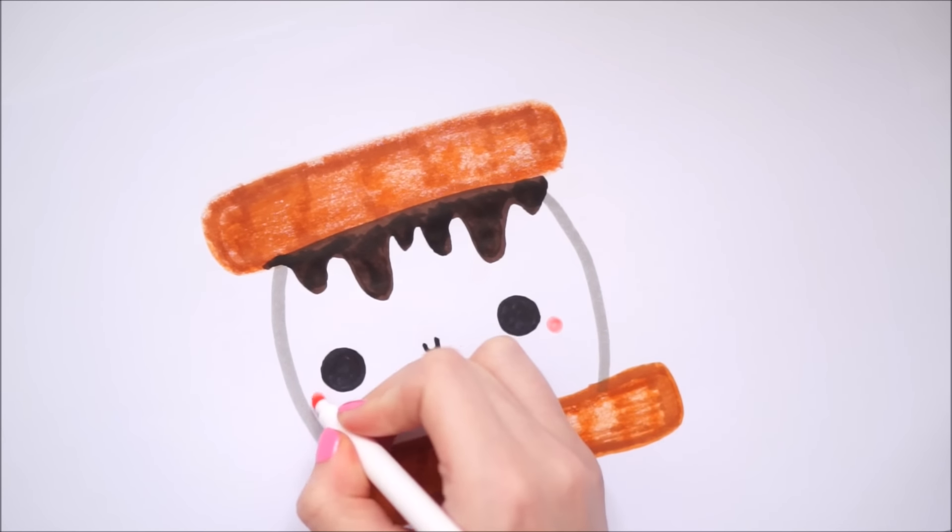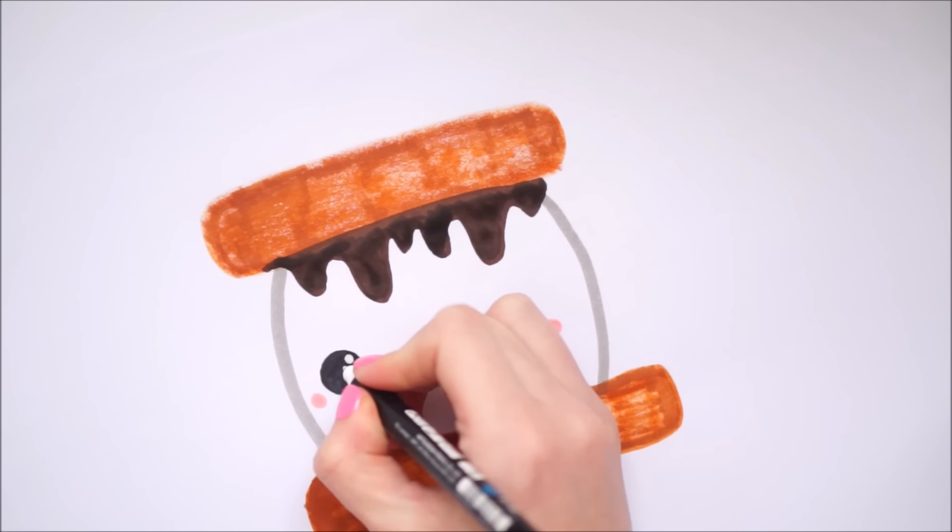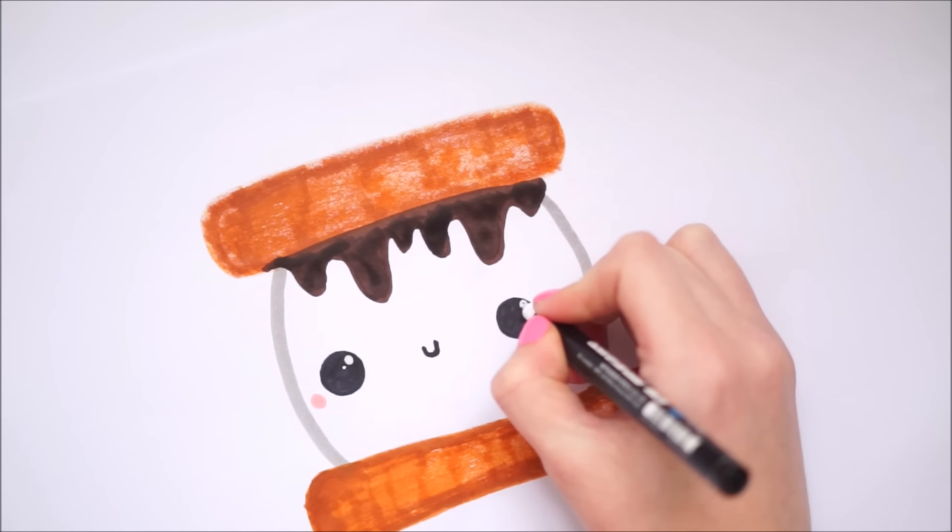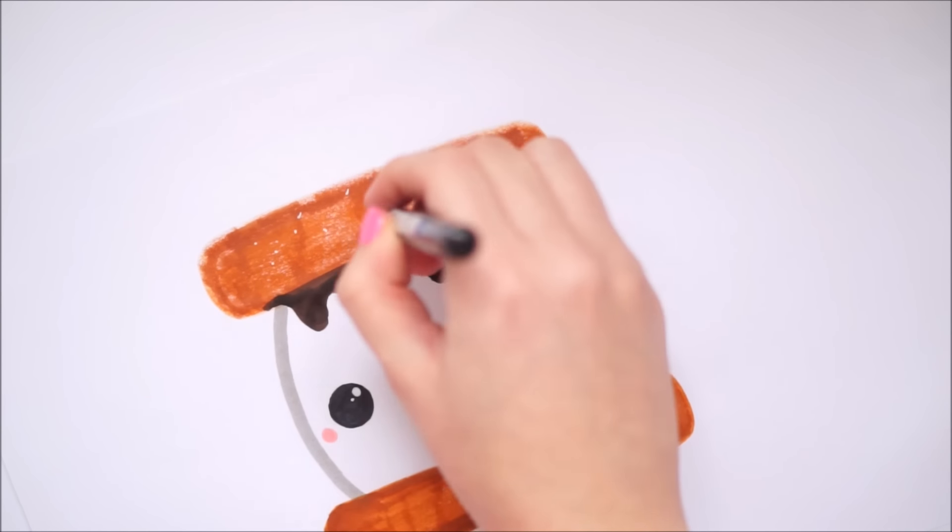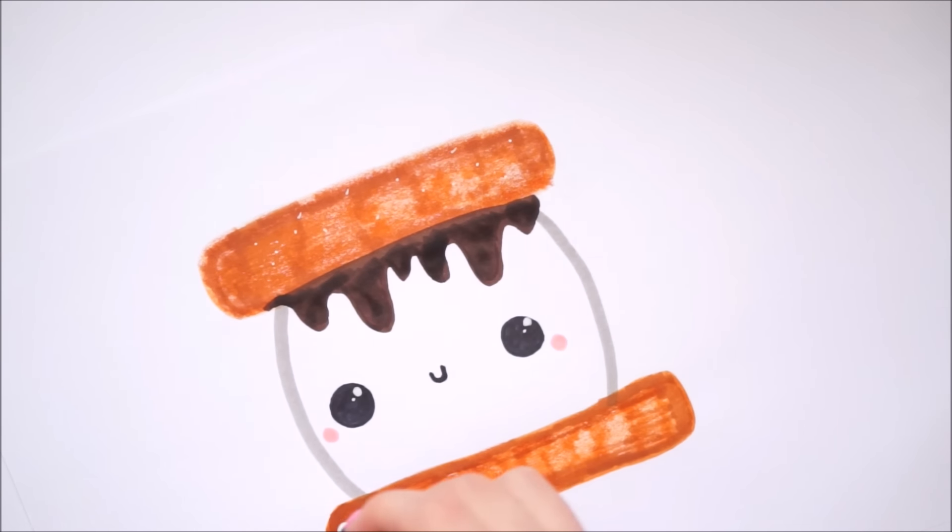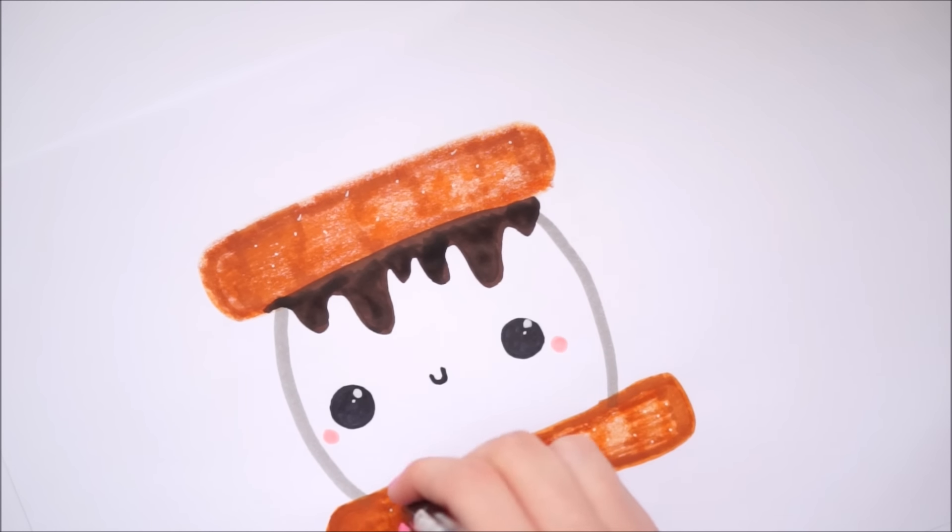I then moved on with a pink marker and just did little blushes next to both eyes. Then I used my white Posca pen to add white dots to the eyes for a little bit of highlight. I also added some dots to the biscuit bits on the top and the bottom and added some little highlight to each bit of the chocolate drips.